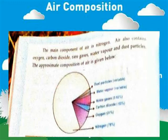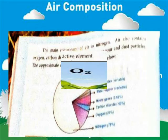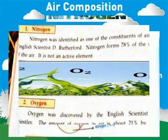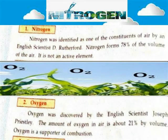Nitrogen was identified as one of the constituents of air by the English scientist D. Rutherford. Nitrogen forms 78% of the volume of the air. It is not an active element.